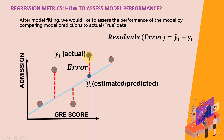The circles here represent the actual values — the training data. These are the x and y coordinates that came from the field; these are facts. We call this yi, where i can take any number 0, 1, 2, 3, and so on, indicating y1, y2, y3, etc. We call these the actual values, true values, or the ground truth.